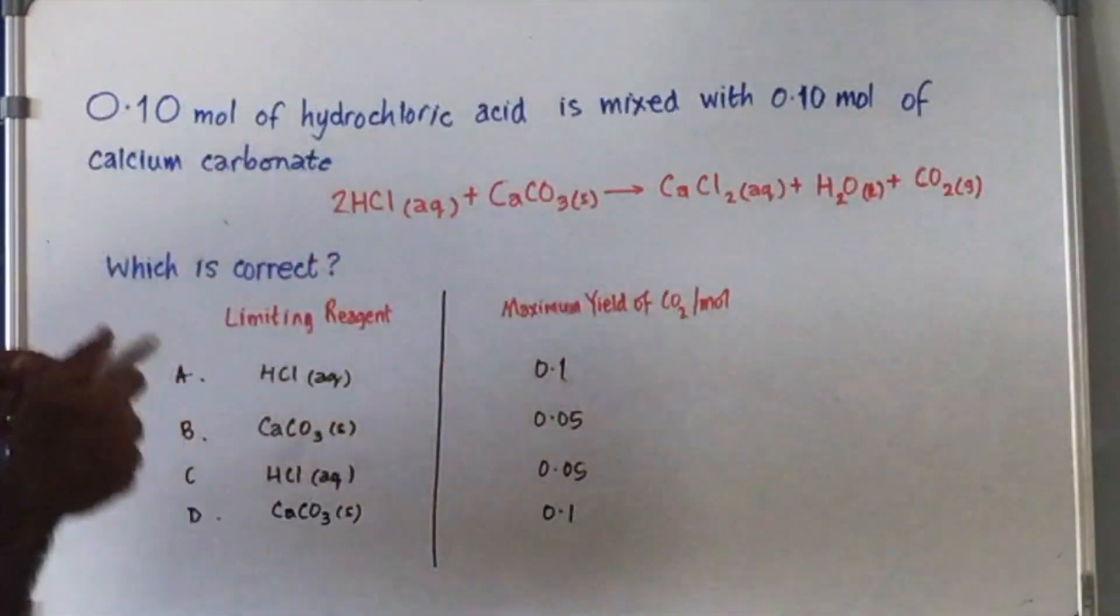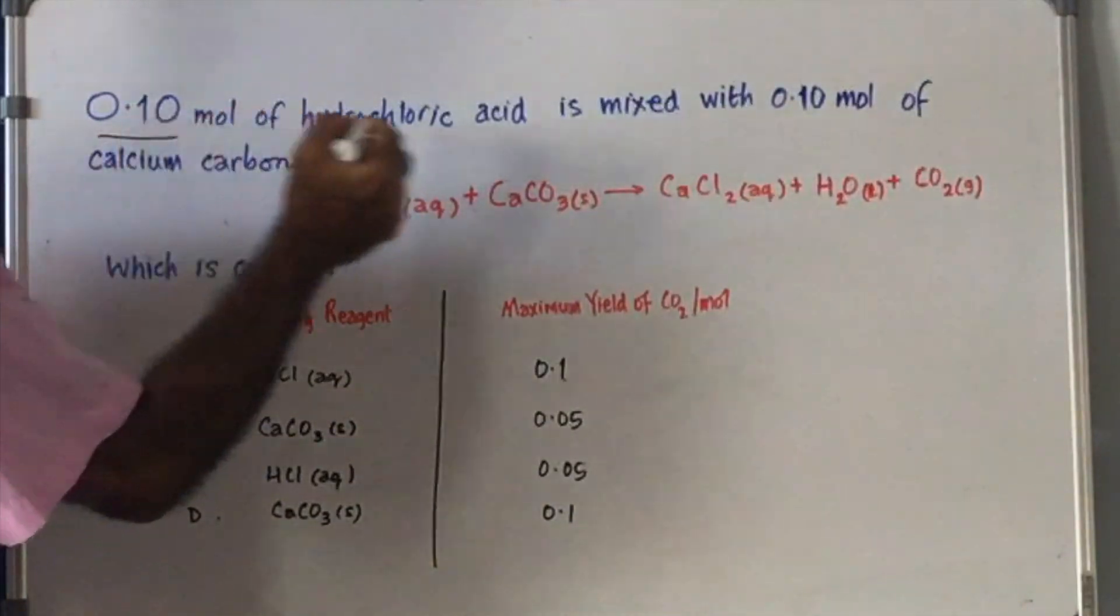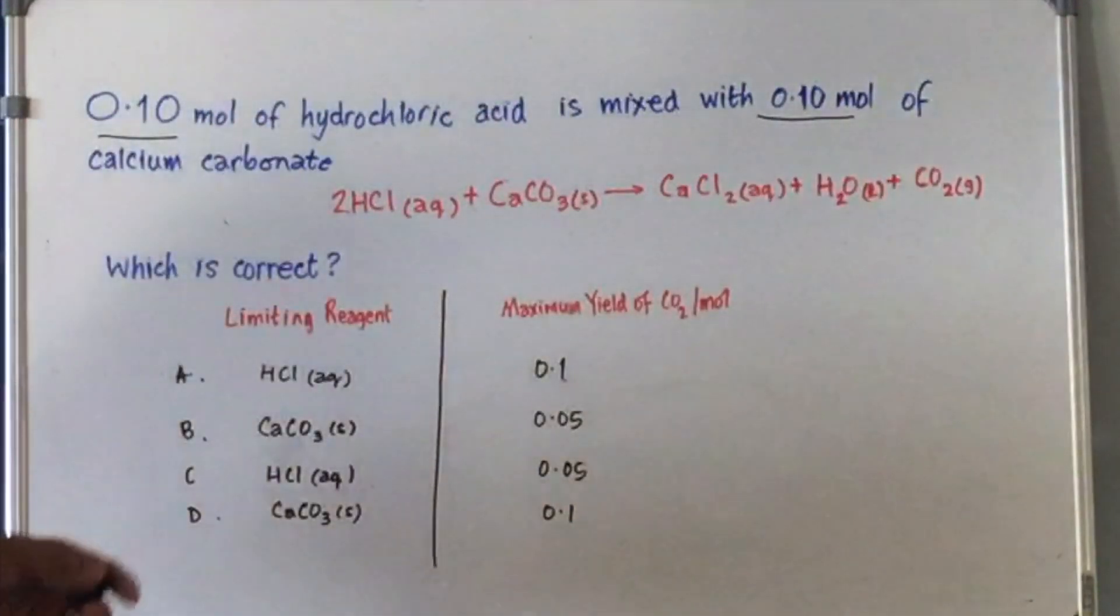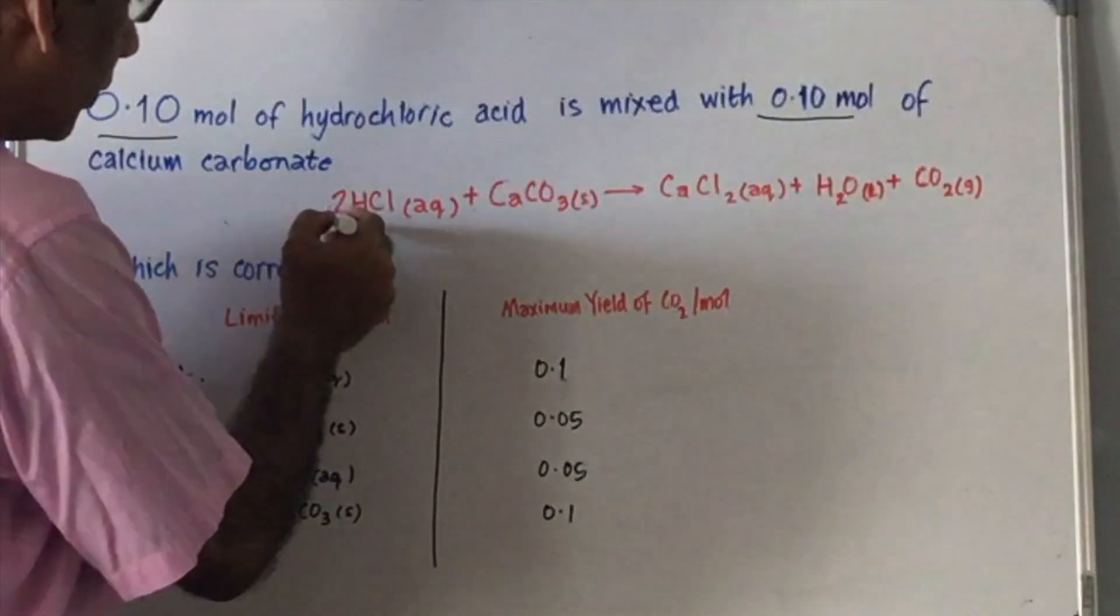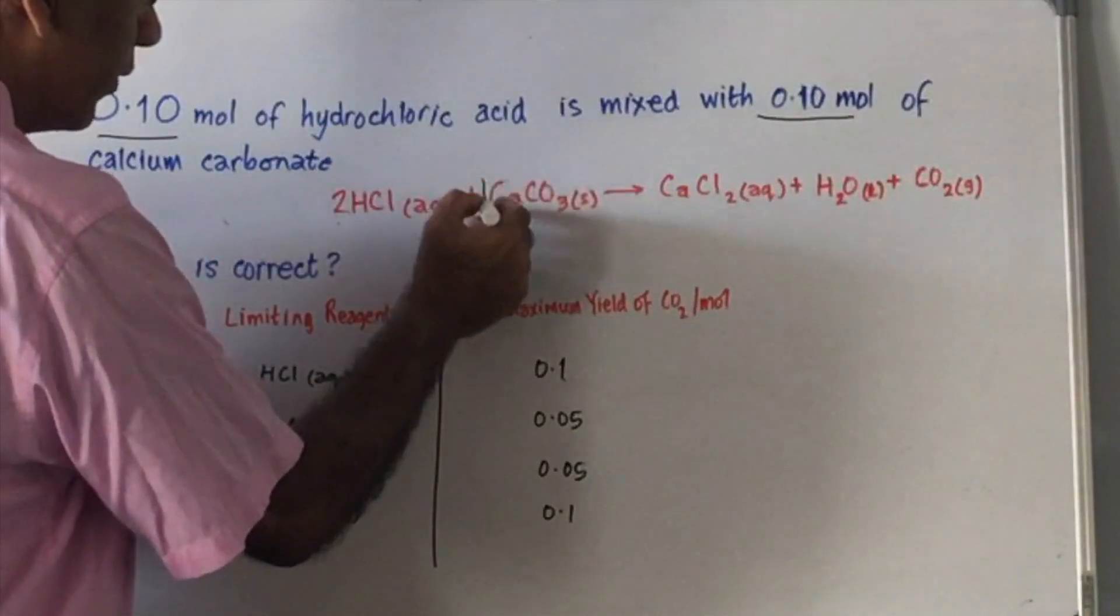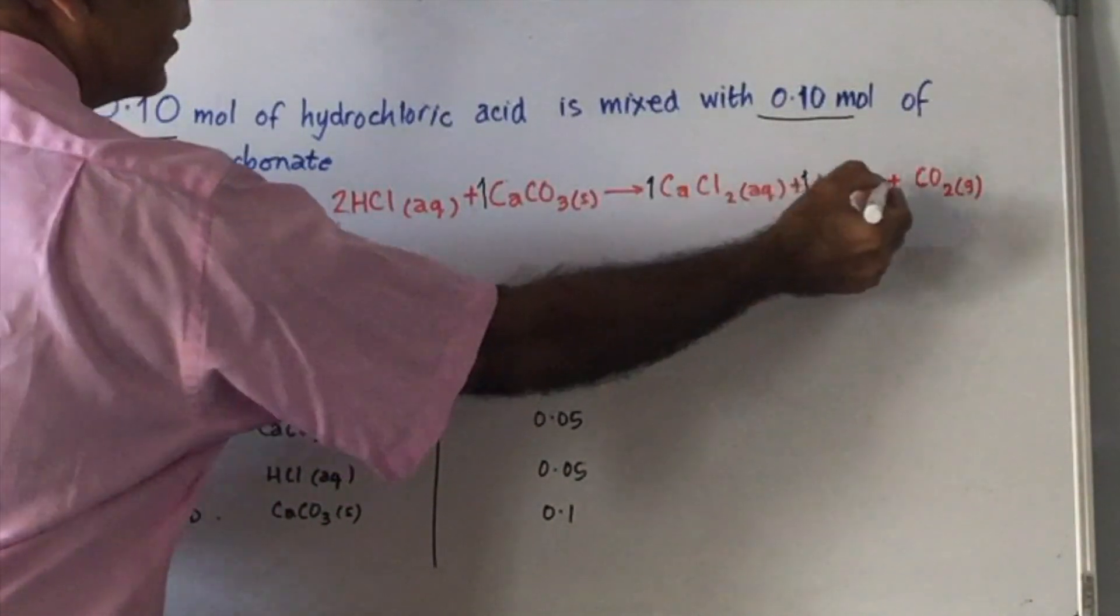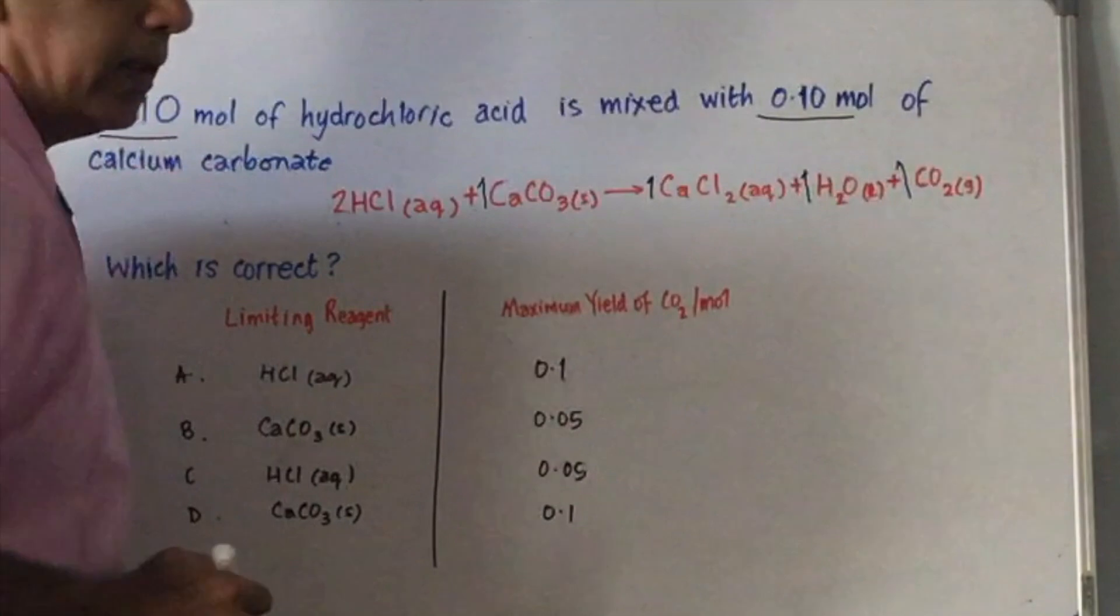Now you can notice here that you've got 0.10 moles in each case, or each reactant. But the mole ratio says 2 to 1. Of course, a 1 is understood here, here, here, and here.